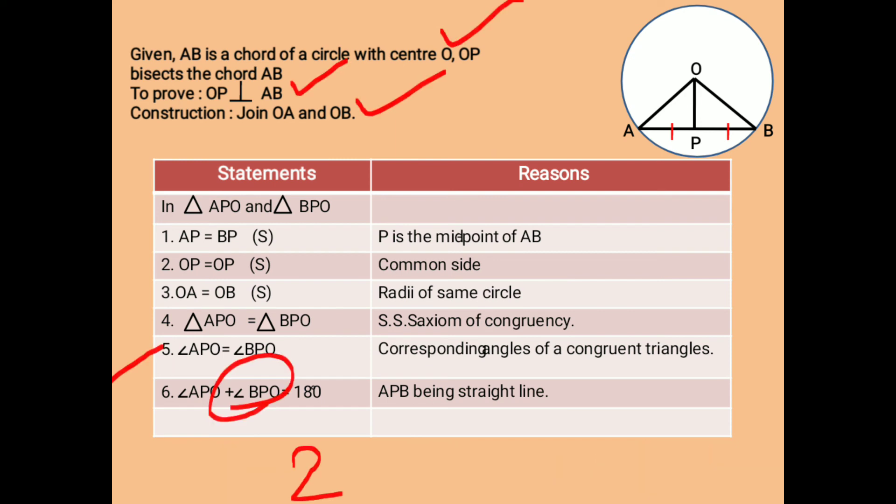Now, this can be written as 2 times angle APO equals 180 degrees. And finally, angle APO equals 90 degrees, which is clear from statements 5 and 6.